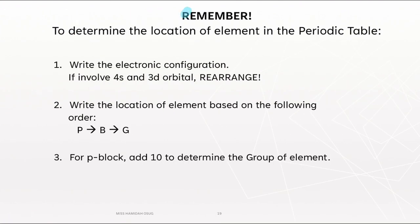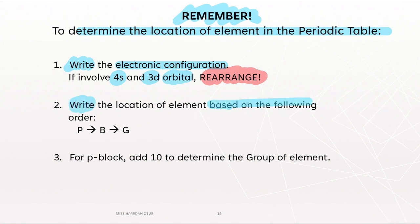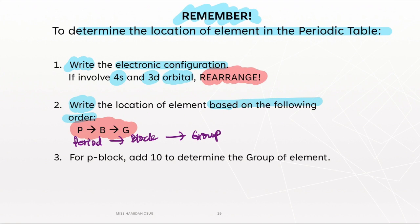As a conclusion, to determine the location of an element in the periodic table: first, write the electronic configuration — if it involves 4S and 3D orbitals, you must rearrange. Second, write the location of the element based on the PBG order: P for period, B for block, and G for group. Lastly, for the P block, add 10 to determine the group. That's all for this video; we will continue with more examples in the next video. Bye-bye and take care.